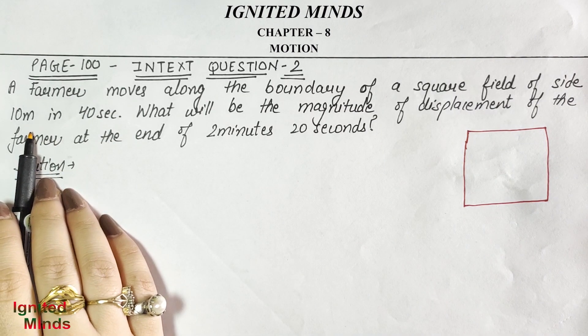Now let's talk about displacement. In the first 40 seconds, the farmer starts from A, completes a full round, and comes back to A. So displacement is 0, because when the initial point and final point of an object are the same, the displacement is zero. In the next 40 seconds, same thing — starts and returns to A, displacement is 0. Same for the third 40 seconds: displacement is 0.